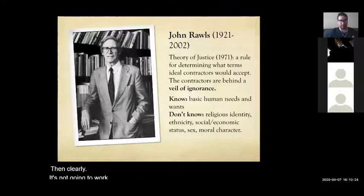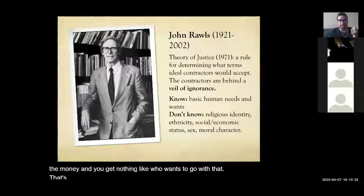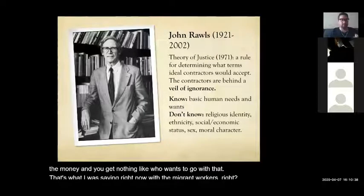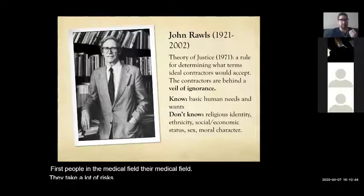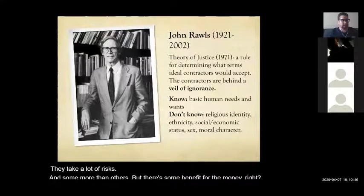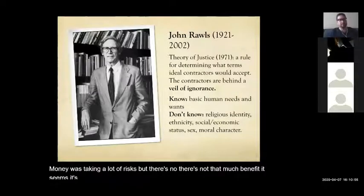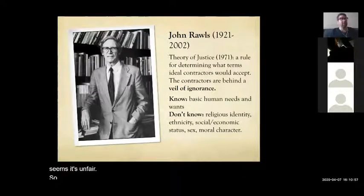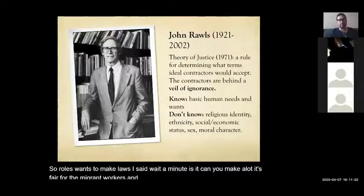If I'm only making laws that benefit me, clearly they won't work — nobody wants to agree to a law that says I get all the money and you get nothing. Like with migrant workers versus the medical field: medical workers take a lot of risk, and they get some benefit from the money. Migrant workers take a lot of risk but not much benefit — it seems unfair. Rawls wants to make laws that are fair for both, not just one of them.